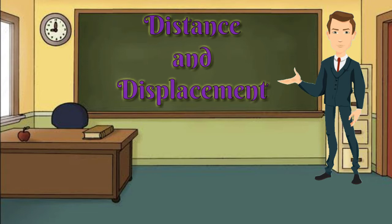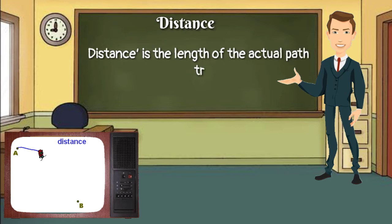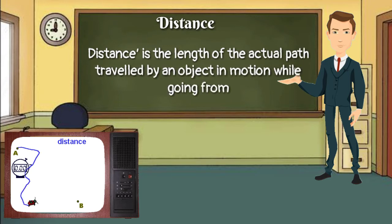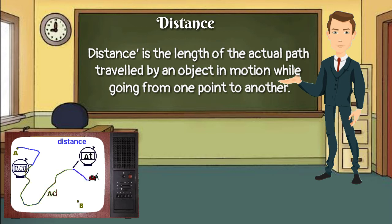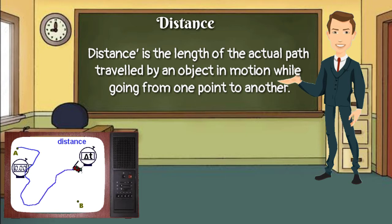First: Distance. Distance is the length of the actual path traveled by an object in motion while going from one point to another point.